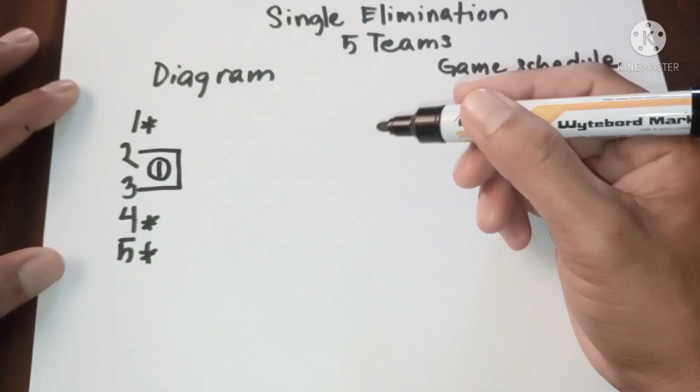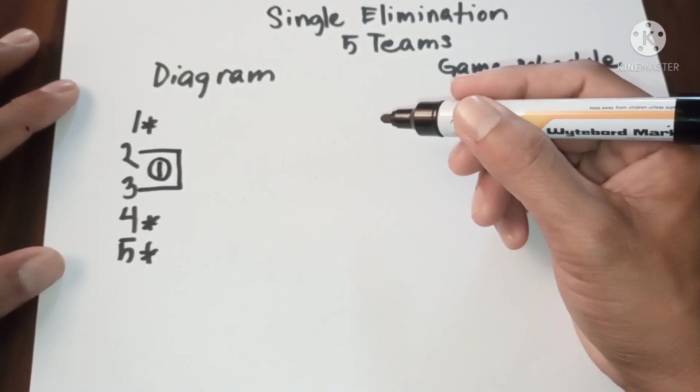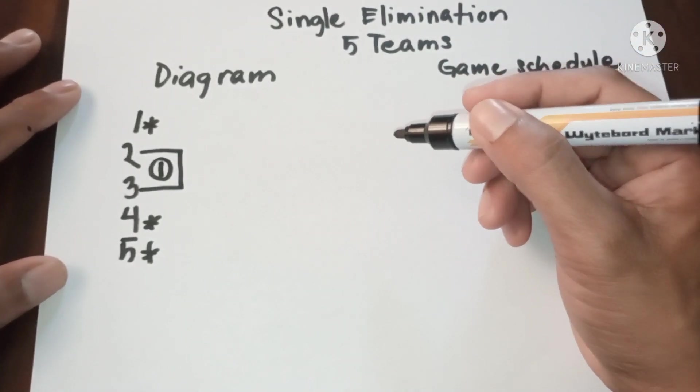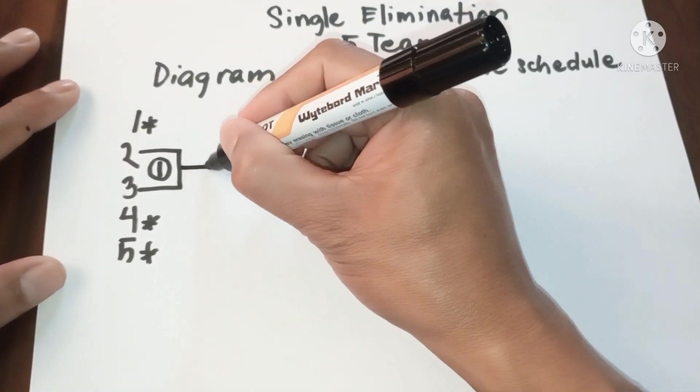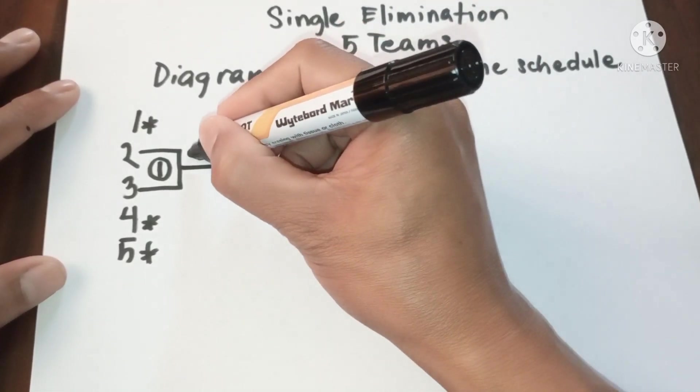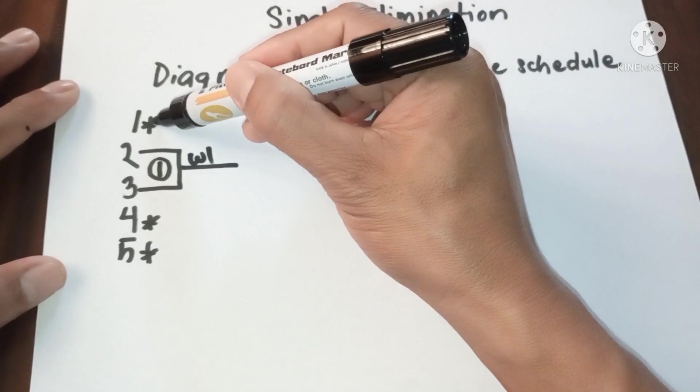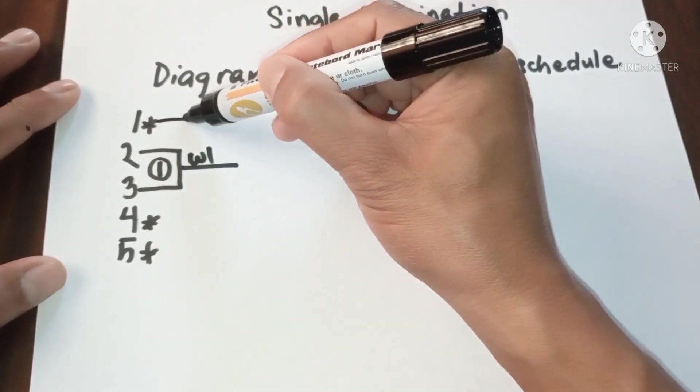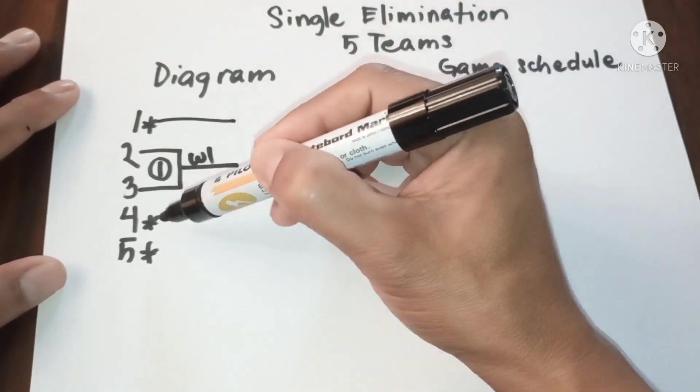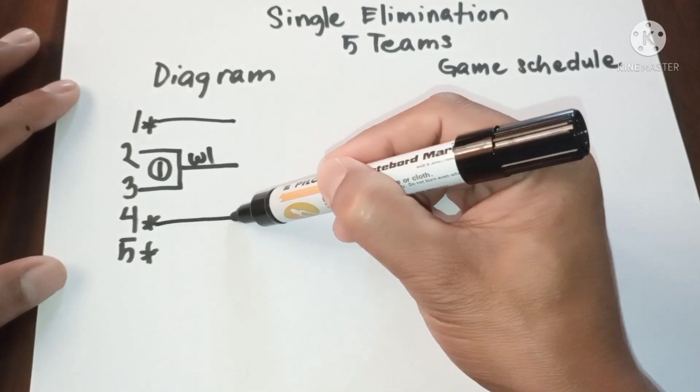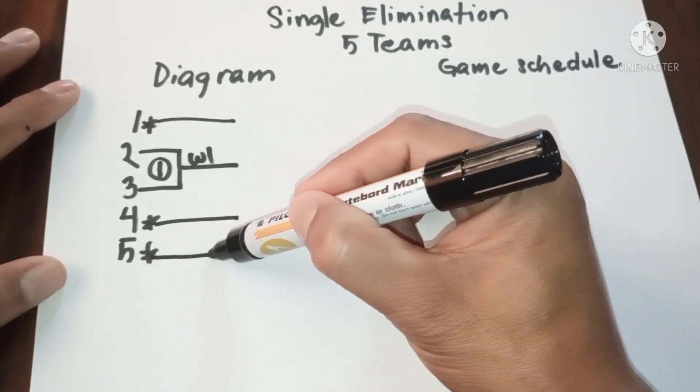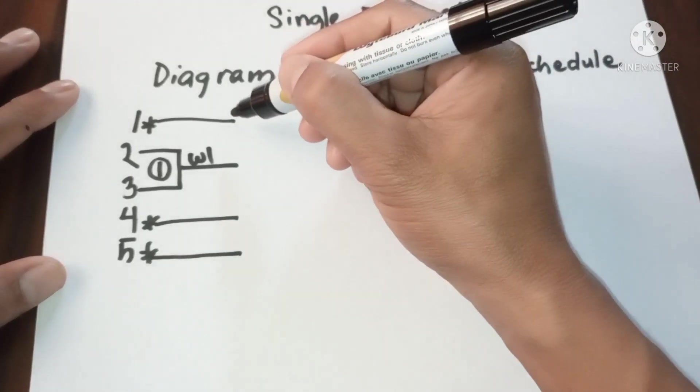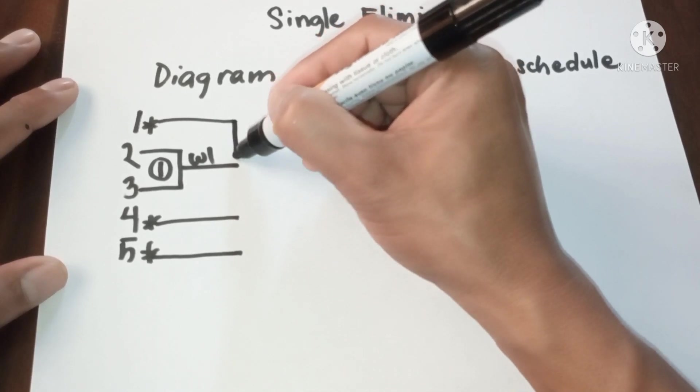This is game one. Now the bye can now play in second round, so this will be winner one from the top, and then from the top again, the vertical line.